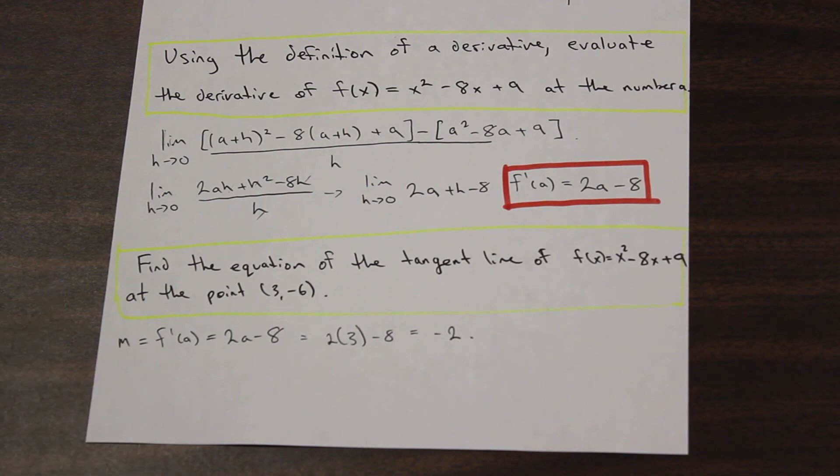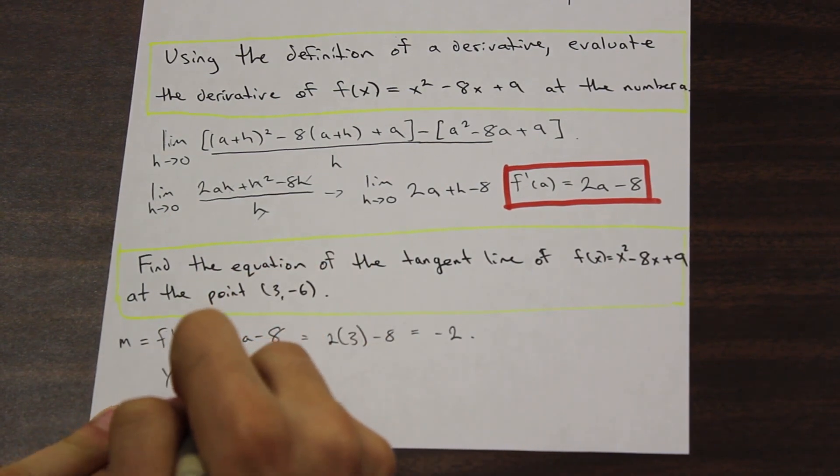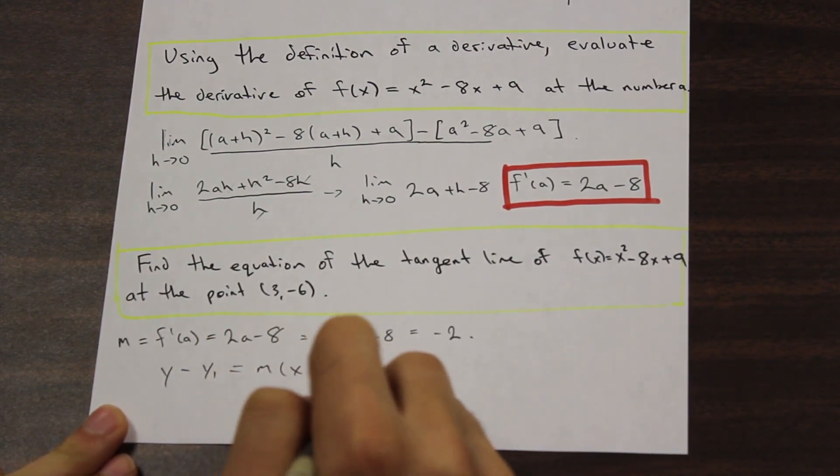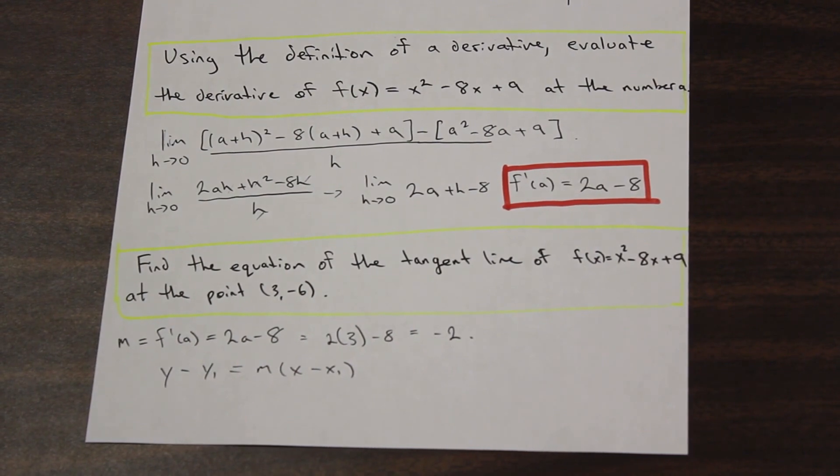And if you'll recall back maybe to high school days, we have the point slope form of the equation of a line. And it is y - y₁ = m(x - x₁). And we can use that to solve for the equation of a line if we have the slope, and we have two points.